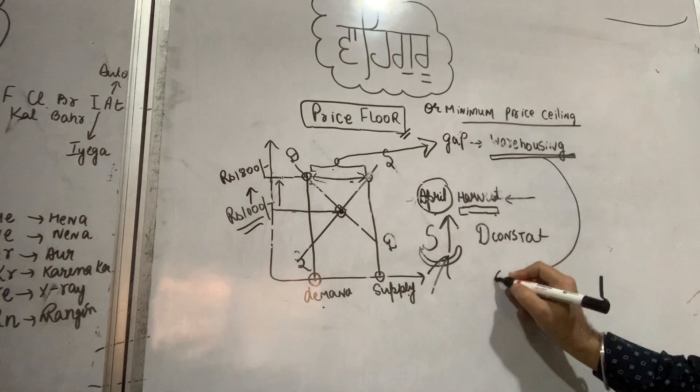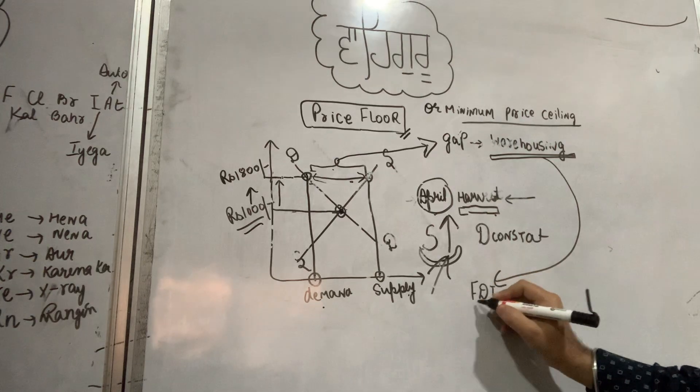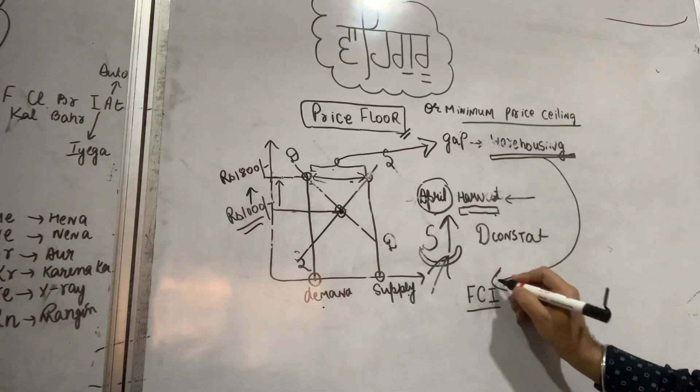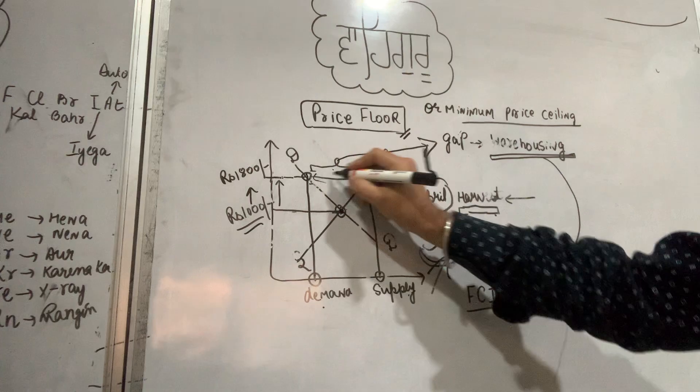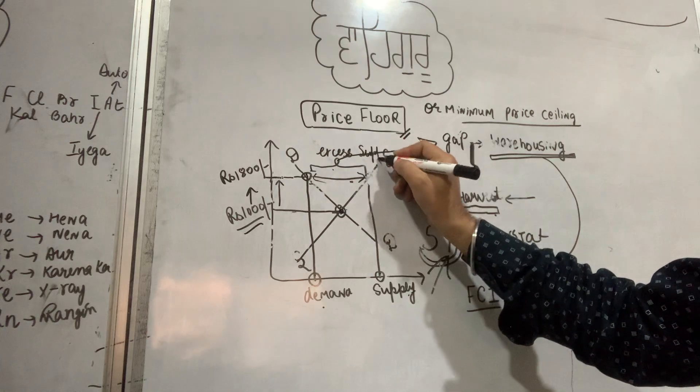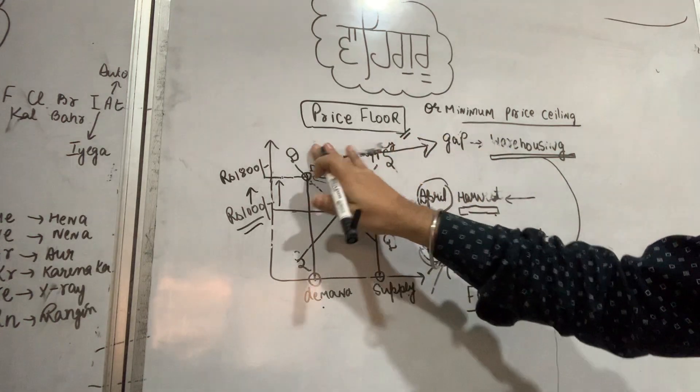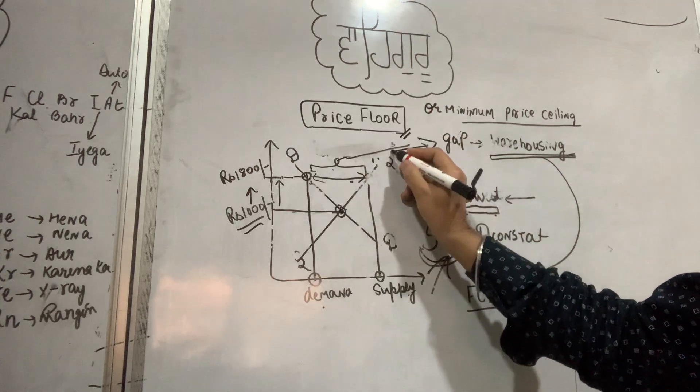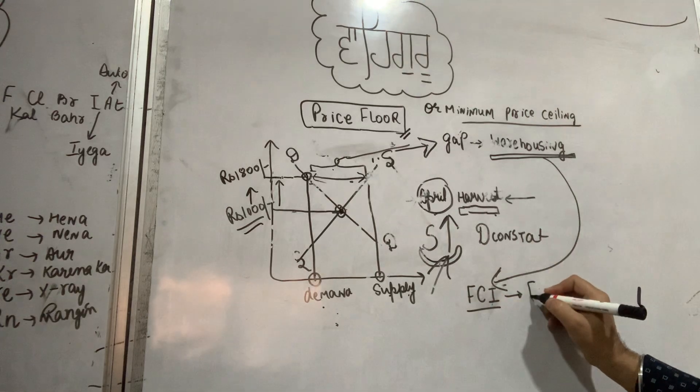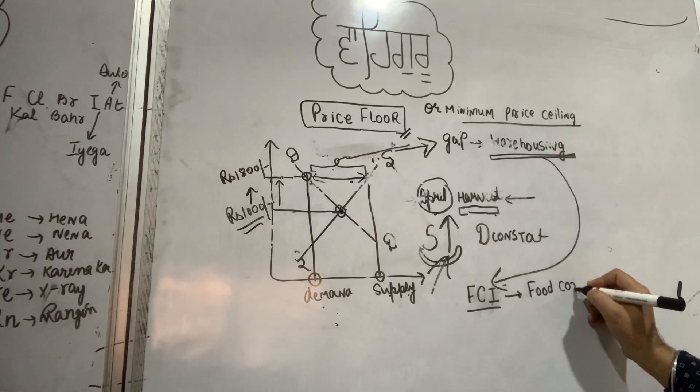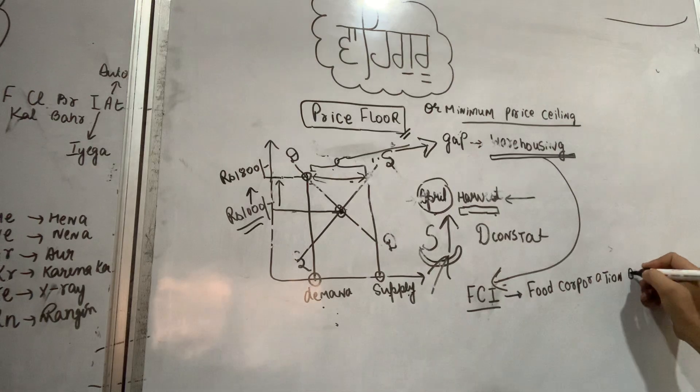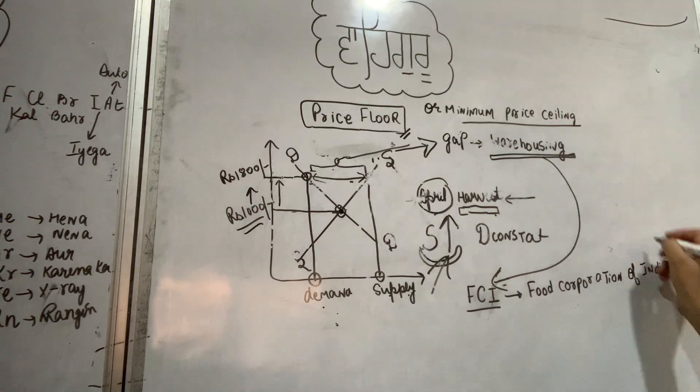Through warehousing, what happens is basically all the FCI godowns - you see in front of grain markets, in your areas, you'll have seen FCI godowns, Food Corporation of India. The government stores it in FCI godowns. Whatever is the excess supply from the market, the excess supply, this excess in supply is stored in FCI Food Corporation of India godowns. Supply is very high, this excess supply is managed and stored in FCI Food Corporation of India godowns.